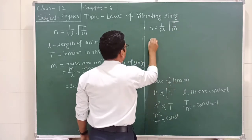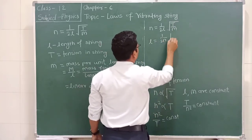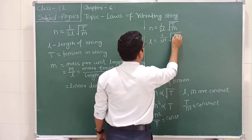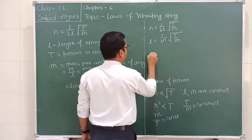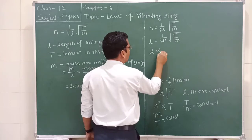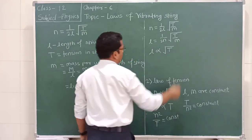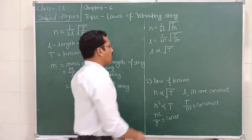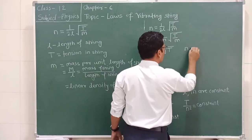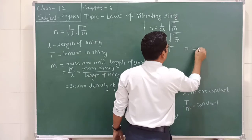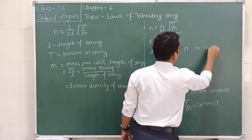From the formula, n equals one upon twice L, under root T by m. So n is directly proportional to the square root of T, because L and m are both constant.